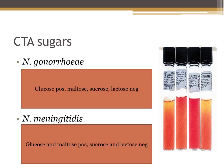To identify Neisseria to species level using CTA sugars: Neisseria gonorrhoeae is glucose positive but maltose, sucrose, and lactose negative. A memory aid — gonorrhoeae starts with G and glucose starts with G, so glucose is positive. Neisseria meningitidis is positive for both glucose and maltose, and negative for sucrose and lactose. A memory aid — meningitidis starts with M and maltose starts with M.